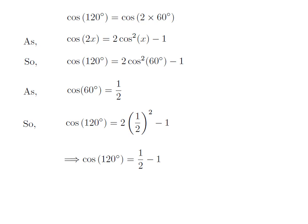Now 2 into square of half is equal to half, as 2 in the numerator will cancel out one of the 2's in the denominator. So we will be left with cosine of 120 degrees is equal to half minus 1.